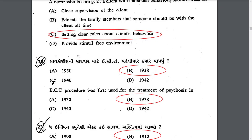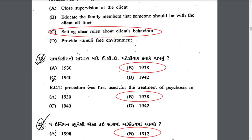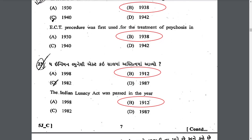ECT procedure was first used for the treatment of psychosis in the year 1938. The Indian Lunacy Act was passed in the year 1912, and it was later revised in 1987 as the Mental Health Act.